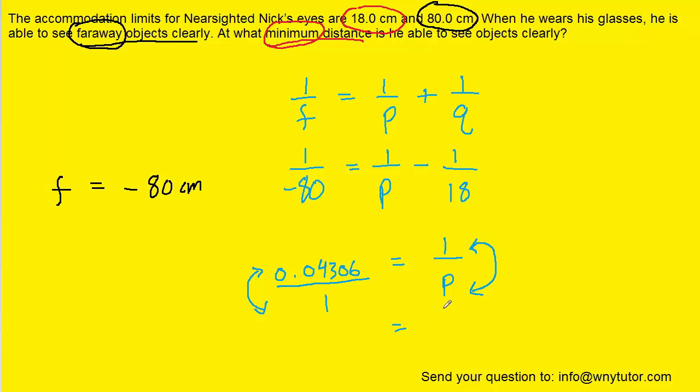So the right-hand side is going to become p over 1, which is just p. And then we can pick up our calculator and type in 1 divided by that decimal. And when we do that, we get a value of approximately 23.2 centimeters.